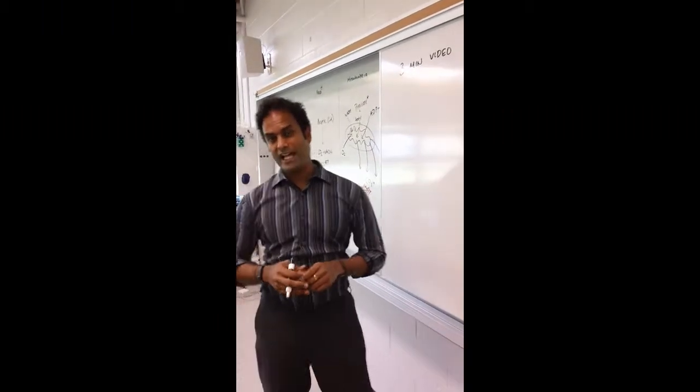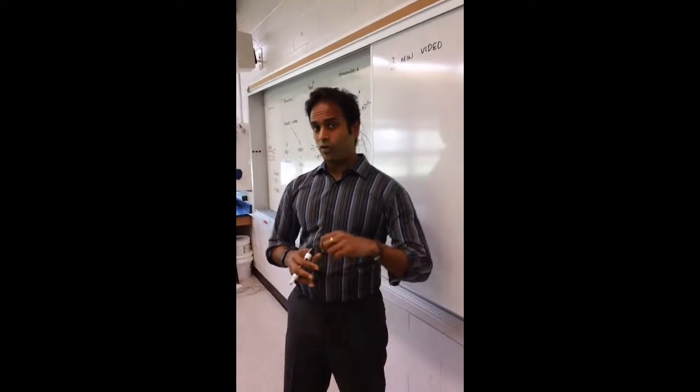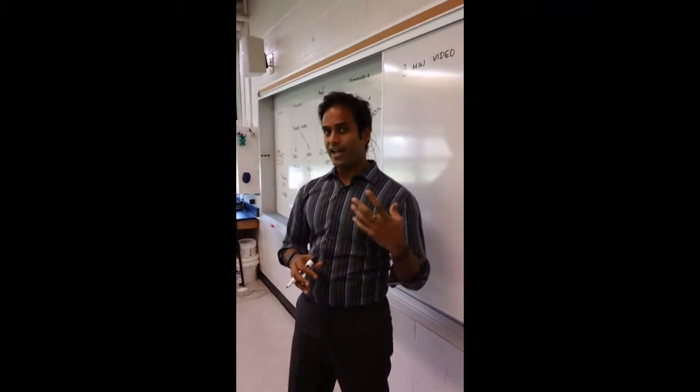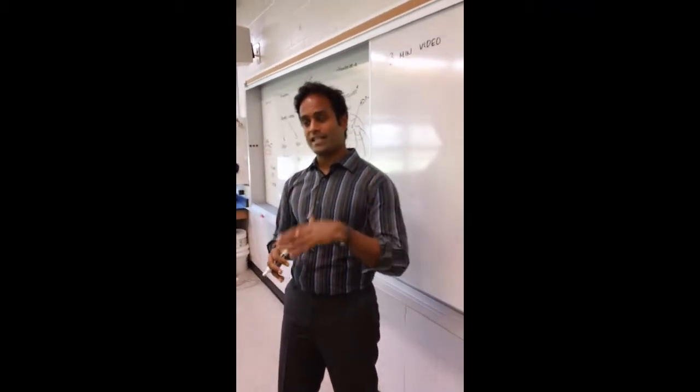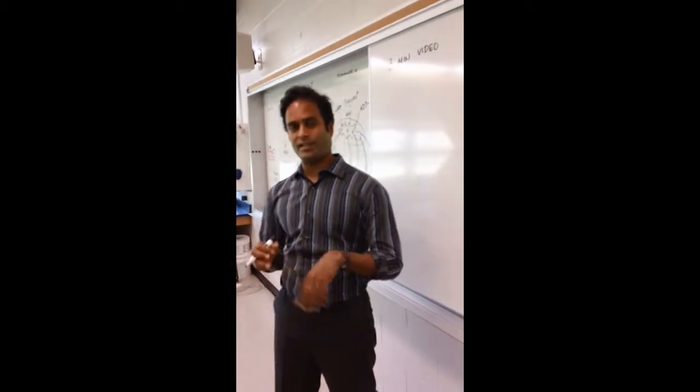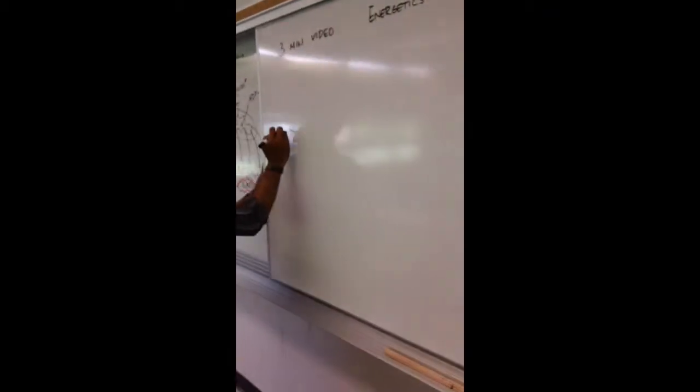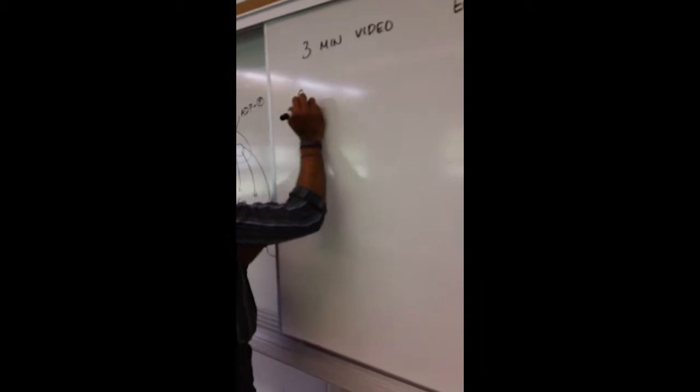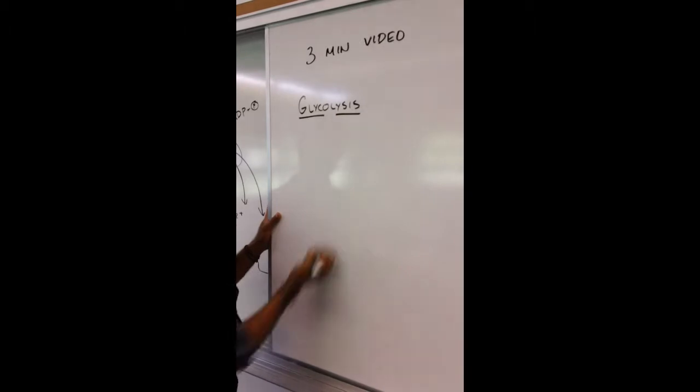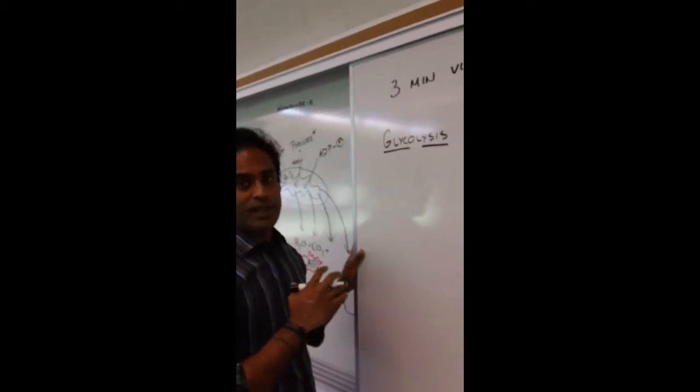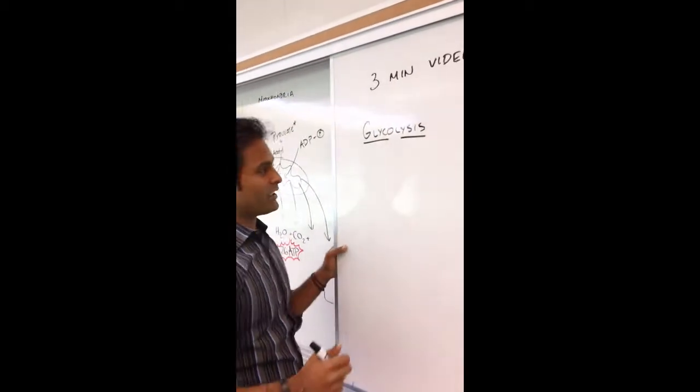Now really, the only usable form of energy we have is ATP. So anything else that stores energy is going to have to be turned into ATP later. So the first step in the whole process is glycolysis. And that basically means glyco from glucose, lyses meaning breaking down.